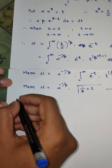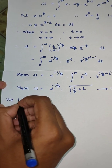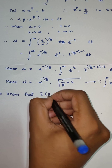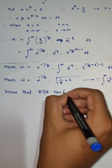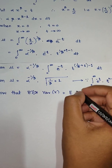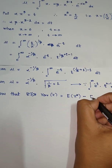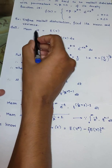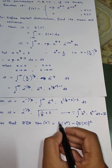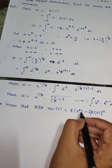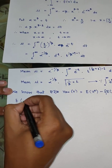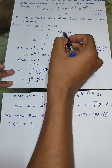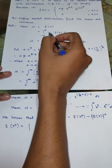Now we will find the variance. By definition, Var(x) = E[X²] − (E[X])². We have already found E[X], which equals mu. So we just need to find E[X²]. For the expectation of x square, instead of x we write x squared in the integral.